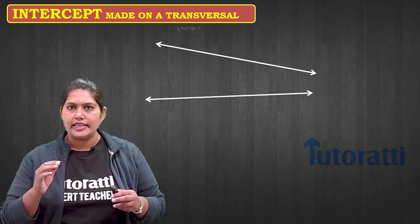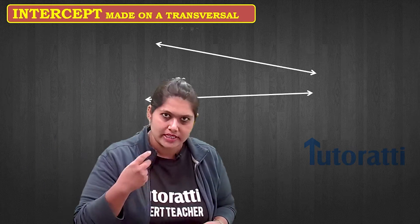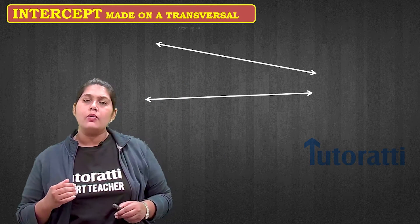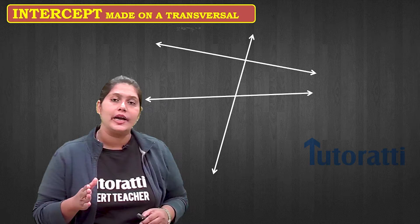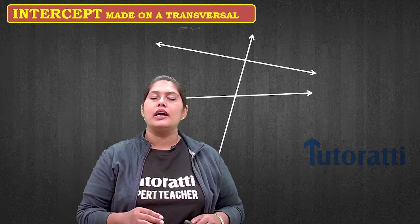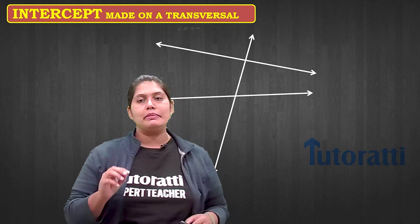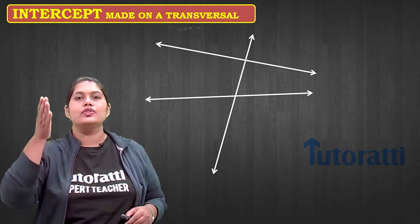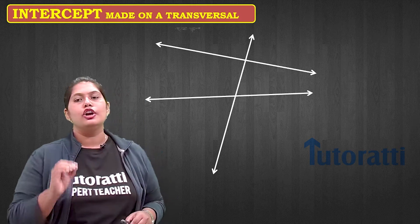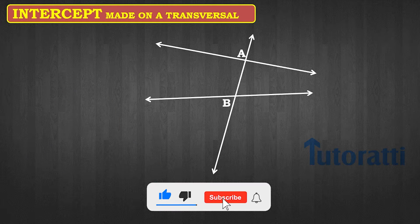For example, if we have a pair of lines — a pair means two — I have a pair of lines here. Now I have another line which is intersecting the two lines at two distinct points. That means the third line, which is vertical, is the transversal for the two horizontal lines.